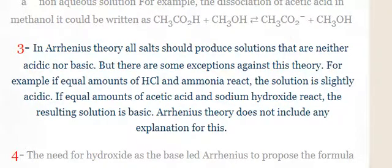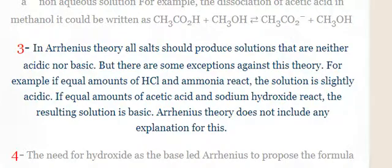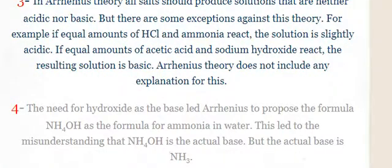Limitation number three: in Arrhenius theory, all salts should produce solutions that are neither acidic nor basic, but there are some exceptions. For example, if equal amounts of HCl and ammonia react, the solution is slightly acidic. If equal amounts of acetic acid and sodium hydroxide react, the resulting solution is basic. Arrhenius theory doesn't include any explanation for this.